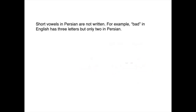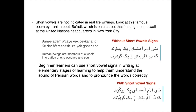Short vowels in Persian are not written. For example, BAT in English has three letters, but only two letters in Persian. Short vowels are not indicated in real-life writings.